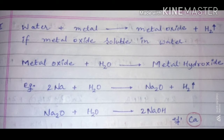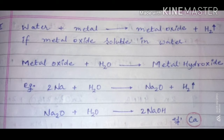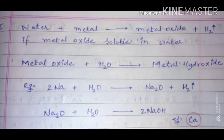In this video we will discuss the next property of metals. When water reacts with metal, it forms metal oxide plus hydrogen gas. This is the common reaction — whenever water and metal react, metal oxide always forms with hydrogen gas. The next reaction of metal oxide takes place when metal oxide is soluble in water. If metal oxide is soluble in water, the further reaction takes place: metal oxide reacts with water and forms metal hydroxide.